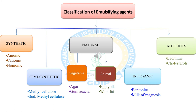The first semi-synthetic emulsifier is methyl cellulose, which is a synthetic derivative of cellulose. The second is sodium carboxymethyl cellulose, used at a concentration of 0.5 to 1 percent.